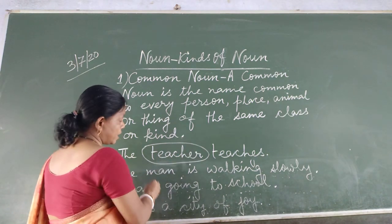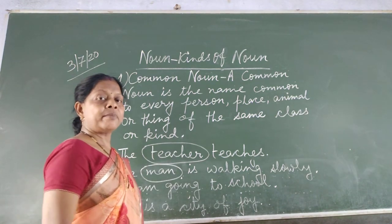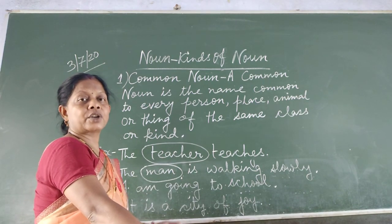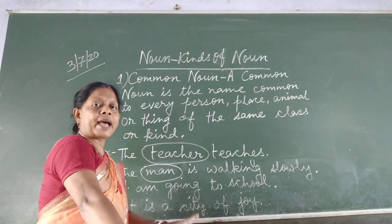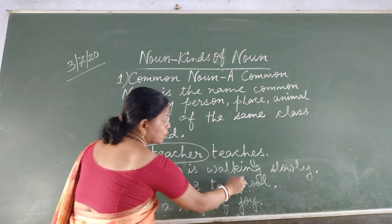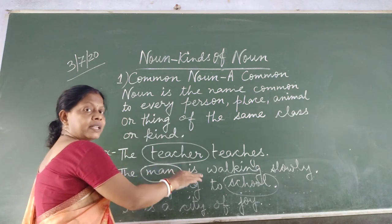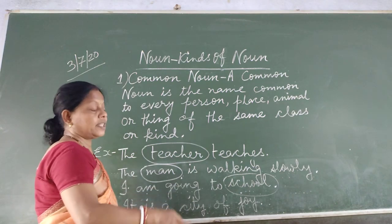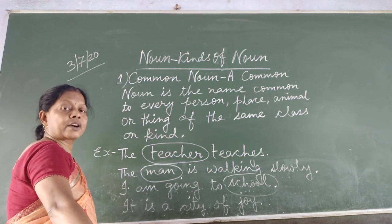'The man is walking slowly.' Here, the word 'man' is a common noun. Man means any type of man — whether he is young, old, tall, short, fat or thin — doesn't matter. Man simply means man. Similarly, 'I am going to school.' Here 'school' is a common noun — whether it's a private school or a government school, doesn't matter.